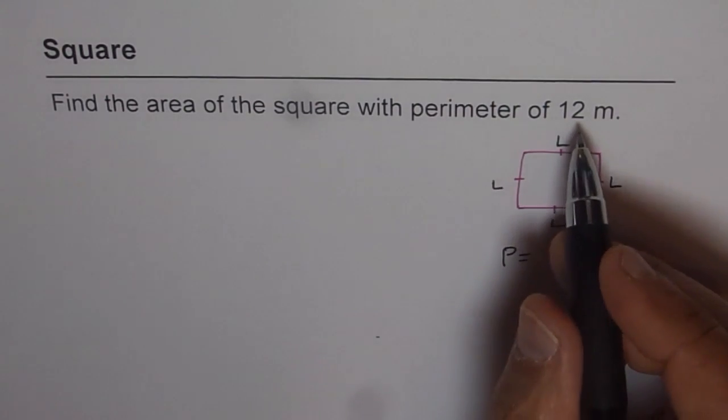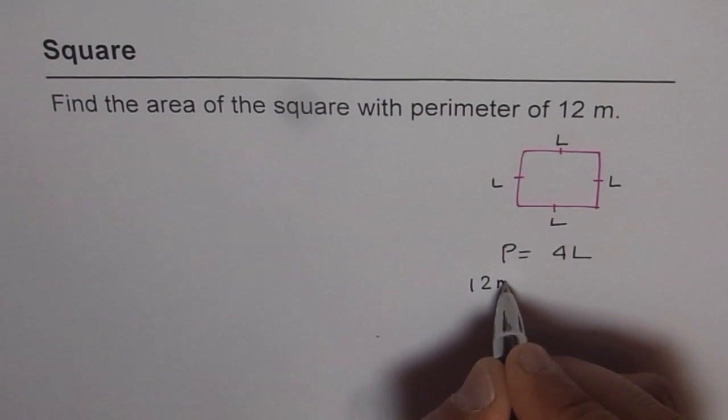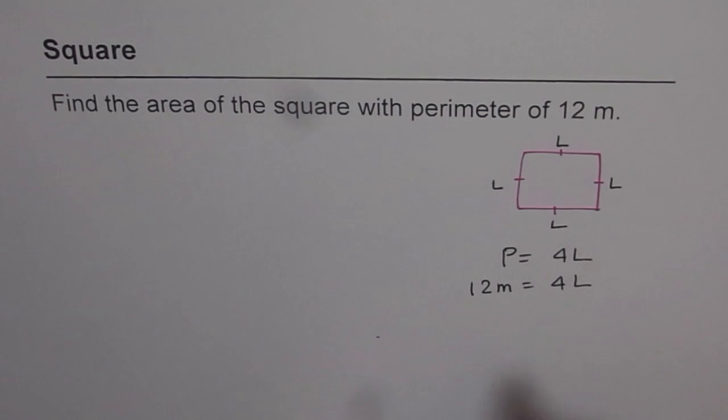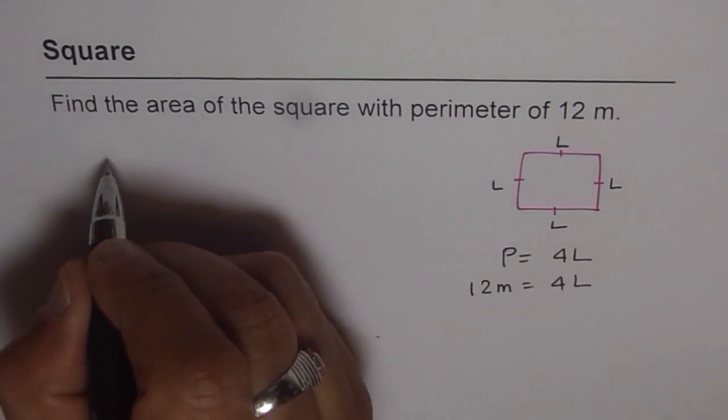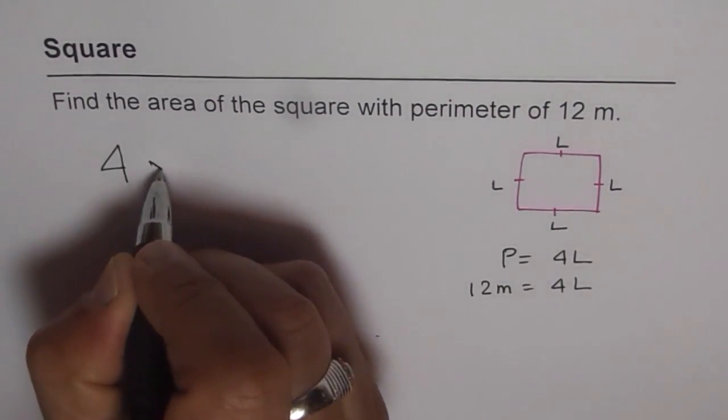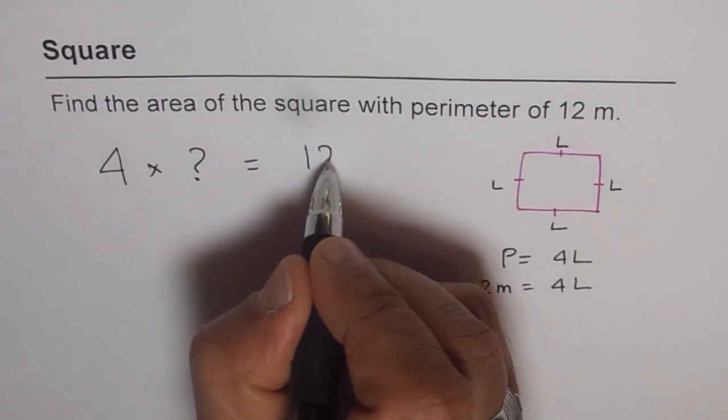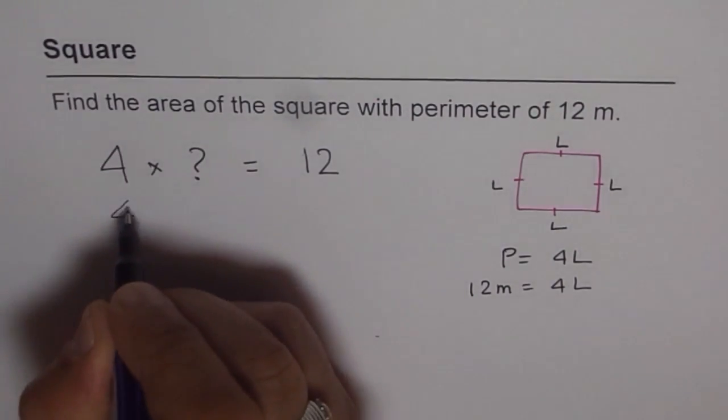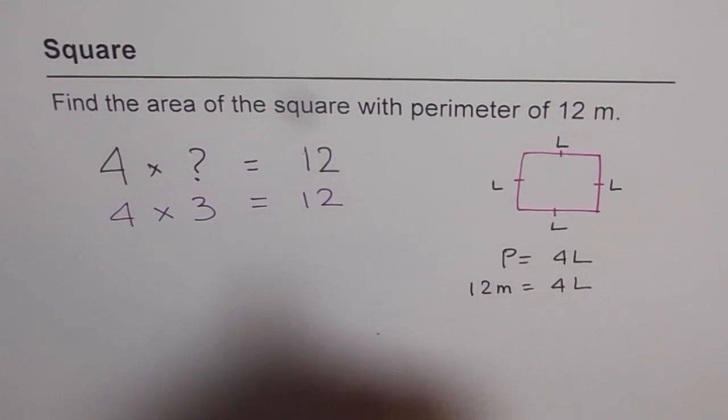But what are we given? We are given that perimeter is 12 meters. So it is 12 meters equals 4 times L. 4 times what is 12 meters? So the question is 4 times what is 12? That is the question. And you get it. The answer is very clear: 4 times 3 is 12.